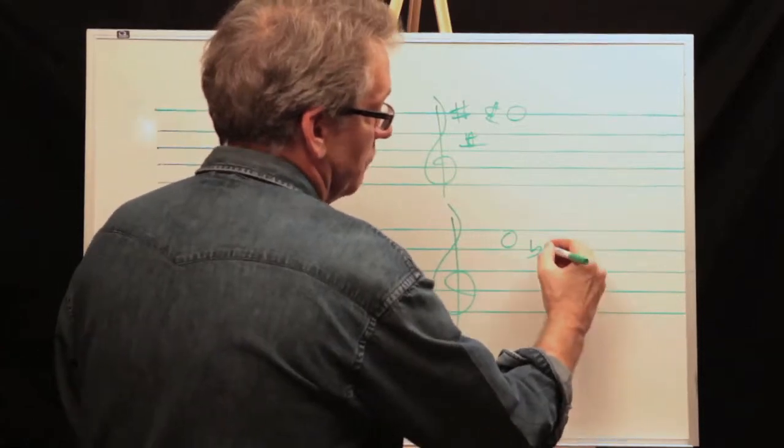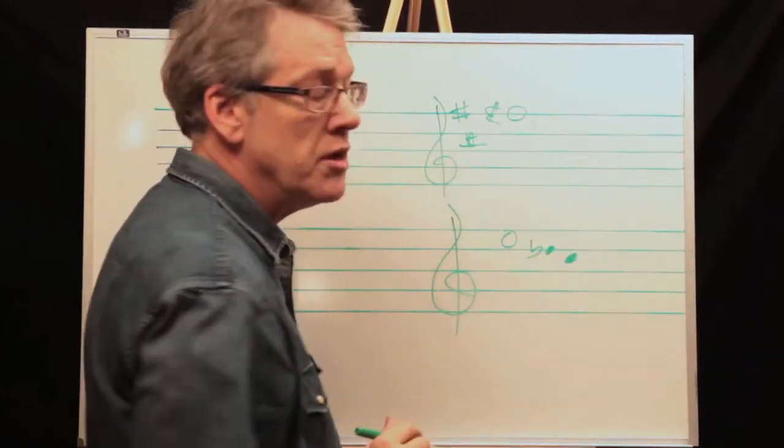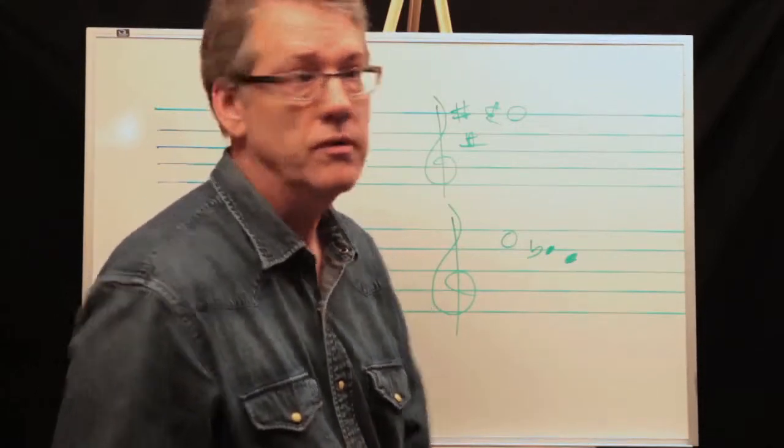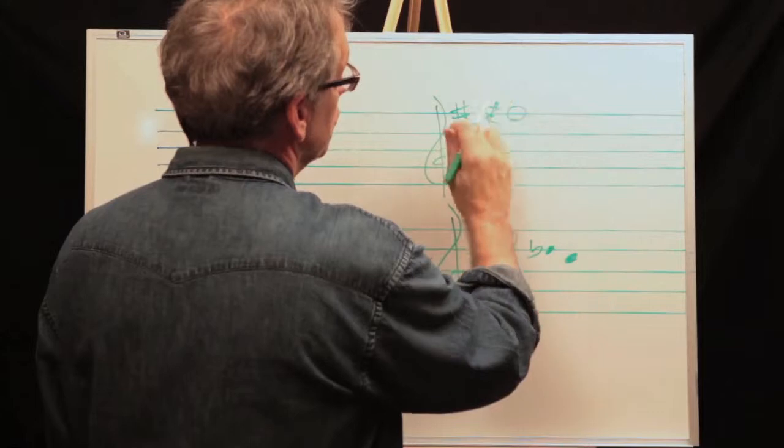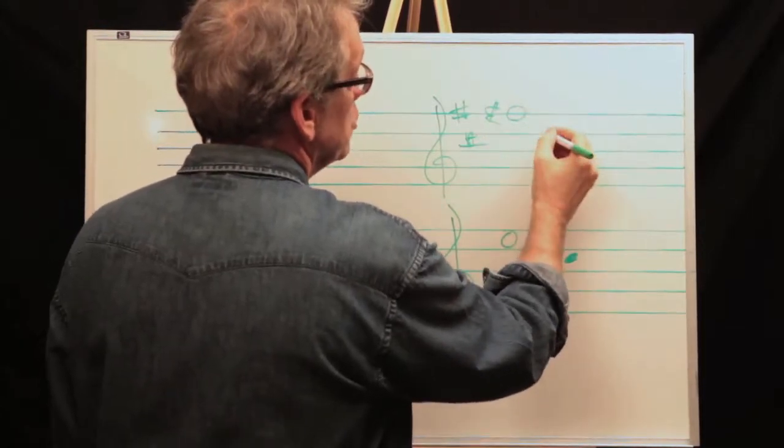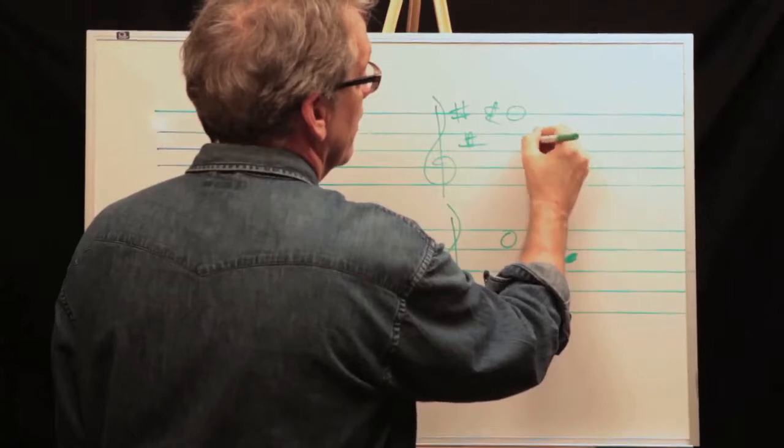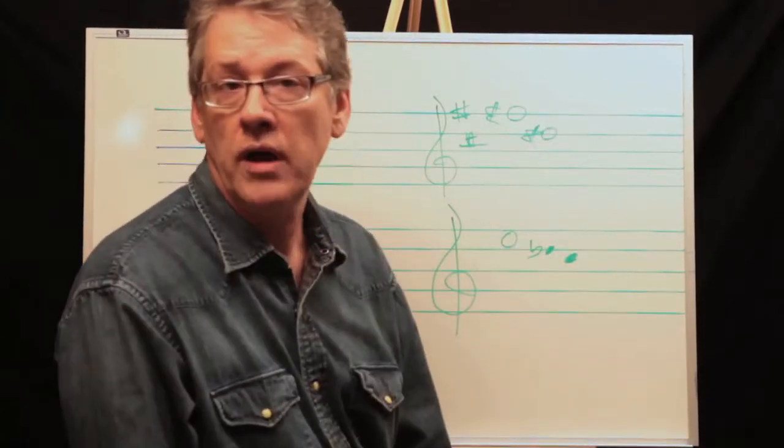A whole step up from D flat is E flat, right? Or D sharp. So since we're looking at sharps, a D sharp, there is no D sharp. This is C sharp and F sharp. We're going to have a sharp there.